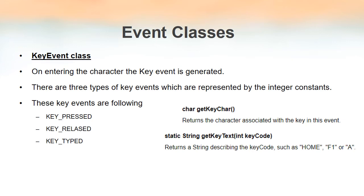The next class is the KeyEvent class. As the name indicates, a key event is generated whenever we press a key on the keyboard. There are three types of key events: key pressed, key released, and key typed. Key typed means when pressing a key results in generating a character. For example, pressing Shift does not generate a character, but pressing the letter A generates the character 'a' — that is the difference between key typed, key pressed, and key released.